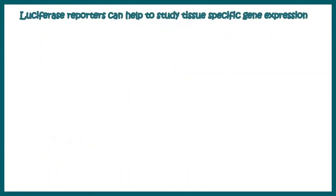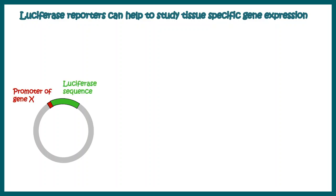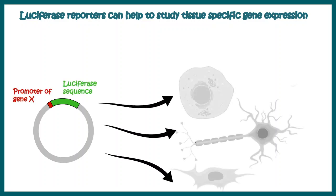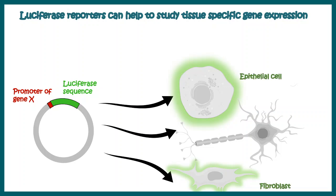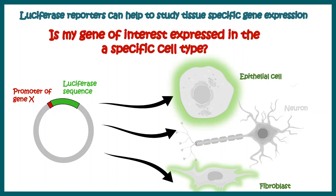Let's discuss some of these examples in more detail. First, let's say we want to understand whether a particular gene is expressed in a tissue-specific manner or not. We clone our promoter of interest upstream to a luciferase reporter gene and then transfect it into different cell types and check the bioluminescence activity. The bioluminescence activity works as a readout telling us whether the gene is expressed in that particular cell type. In this case, bioluminescence was observed from epithelial and fibroblast cells, but not from the neuronal cell — meaning this gene is epithelial or fibroblast specific and is not expressed in neurons.